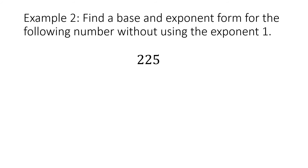Let's look at example 2 — we're doing the same thing. Find a base and exponent form for the following number without using the exponent 1. We have 225. Using our charts, we're looking for what base and exponent gives us 225. You should discover that 15 squared, or 15 to the second power, equals 225. So the base is 15 and the exponent is 2.